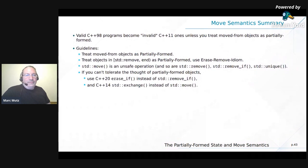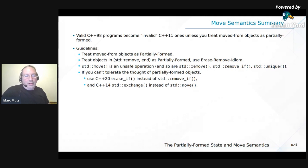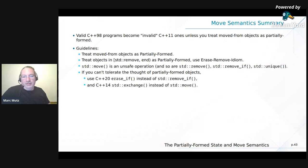Move semantics summary: valid C++98 programs can become problematic C++11 ones unless you treat moved-from objects as Partially Formed. Guidelines: treat moved-from objects as Partially Formed. Treat objects in the range [return value of std::remove, end) as Partially Formed — use the erase-remove idiom. std::move is an unsafe operation, and so are std::remove, std::remove_if, and std::unique. If you can't tolerate partially formed objects, don't create them — always initialize directly, use std::erase_if instead of std::remove_if, and std::exchange instead of std::move.